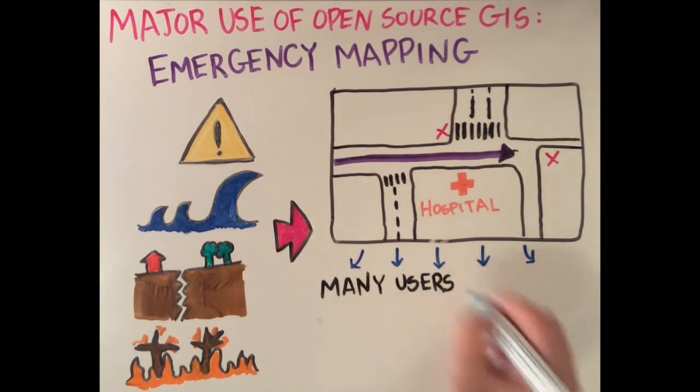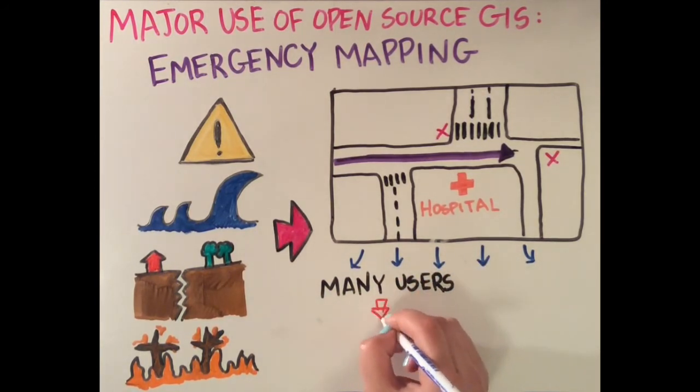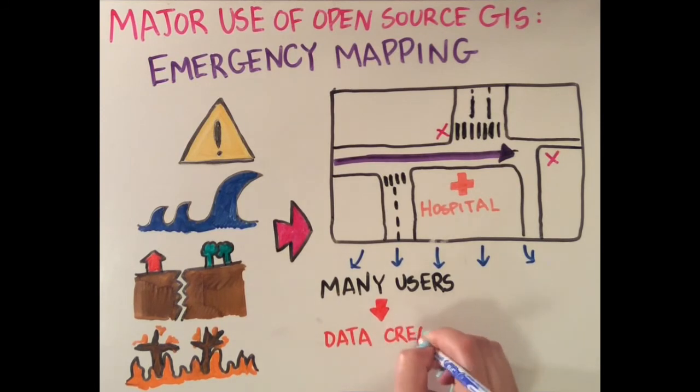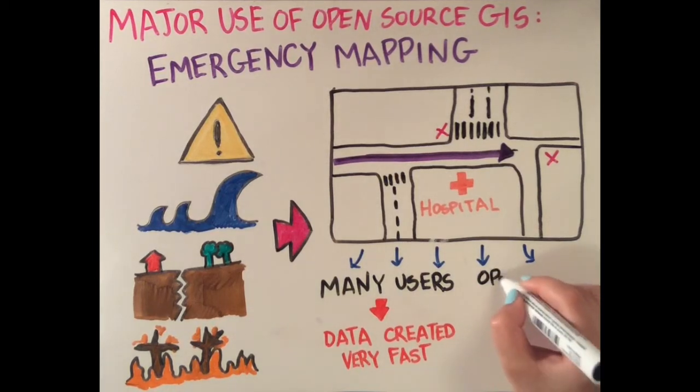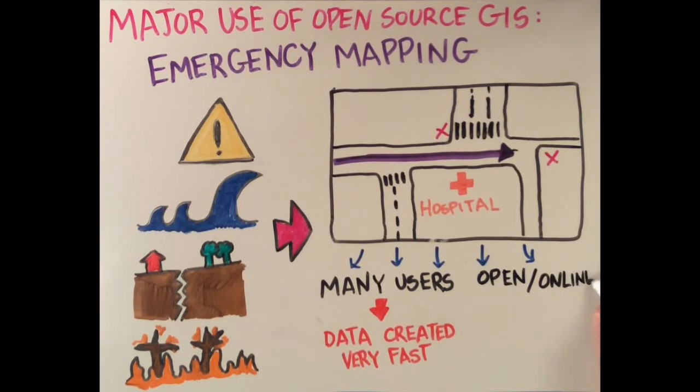Because of the large community of open source software users, when this data is needed, it can be generated relatively quickly by the large community of software users. Also, because these platforms are open and often hosted online, it's easy to get the data to the people who need it most.